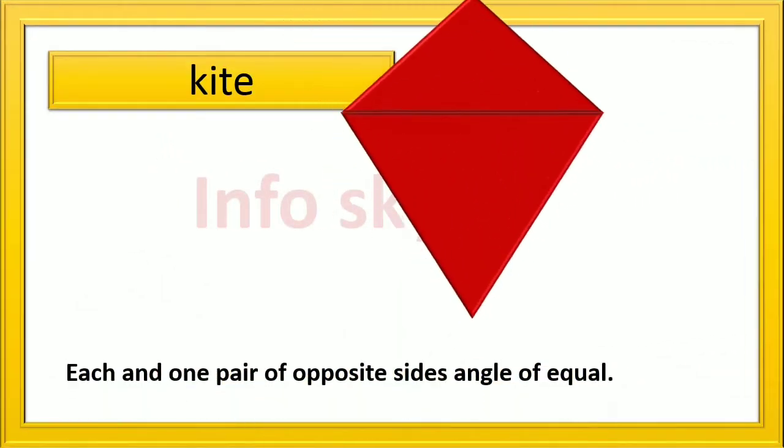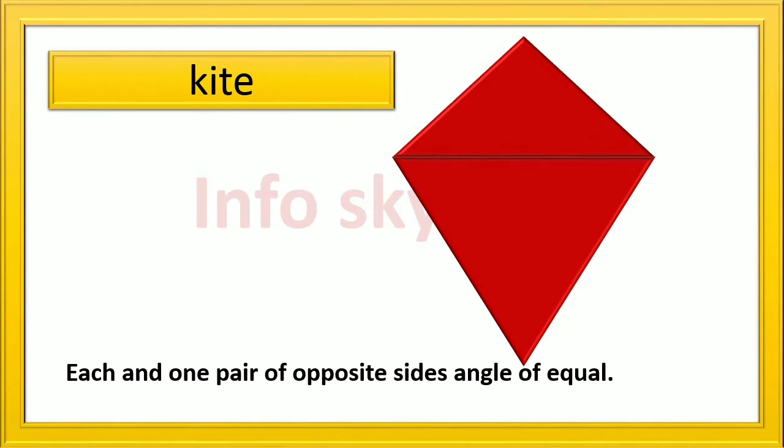Kite: each pair of opposite sides angle are equal.